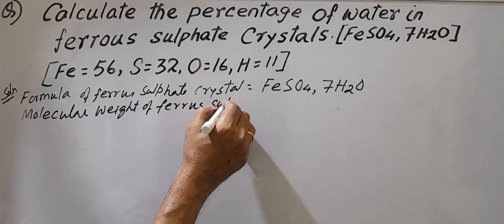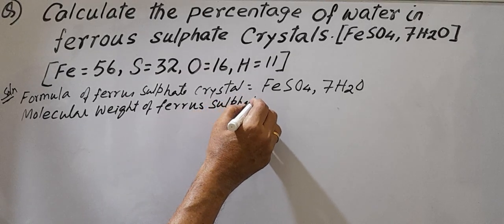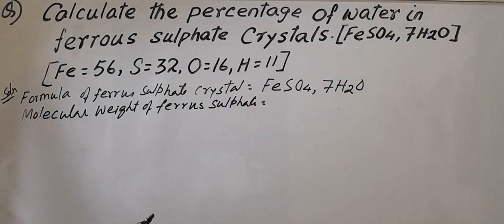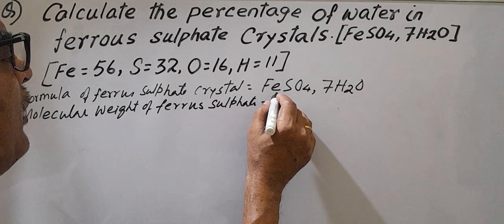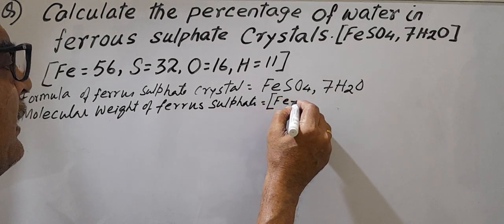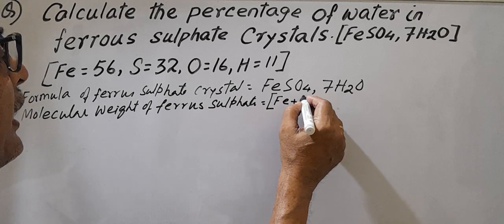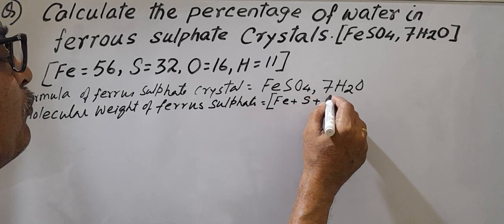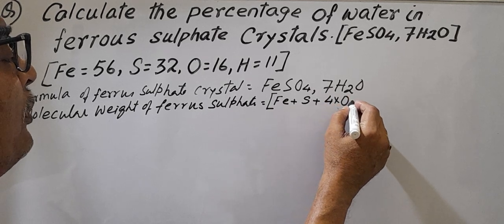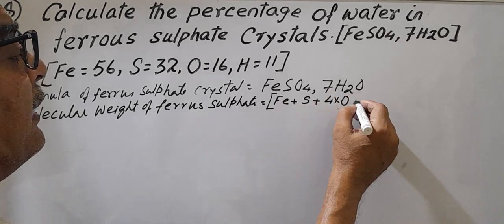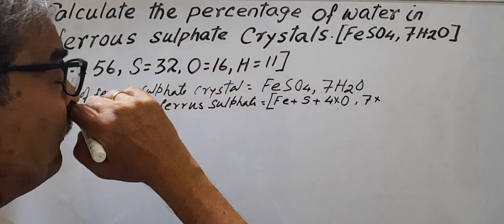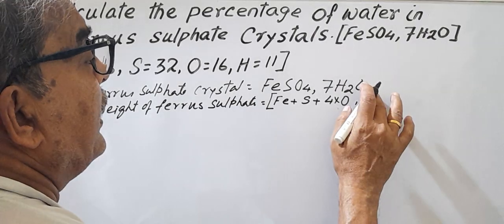Ferrous sulfate, equal to Fe plus S plus O4, Fe plus S plus four oxygen, into oxygen four, so much again, then seven into two H, that means this is 14, seven into one.